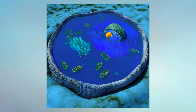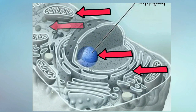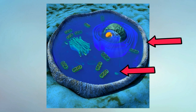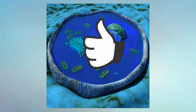Moving from biomes and food webs, you will move in the opposite direction and study something very small: the cell. The cell is the smallest organism that is considered alive. The cell is made of organelles. The major organelles are the mitochondria, nucleus, ER, ribosomes, Golgi apparatus, cell membrane, vacuoles, and cytoskeleton. These organelles all work together to keep the cell alive.